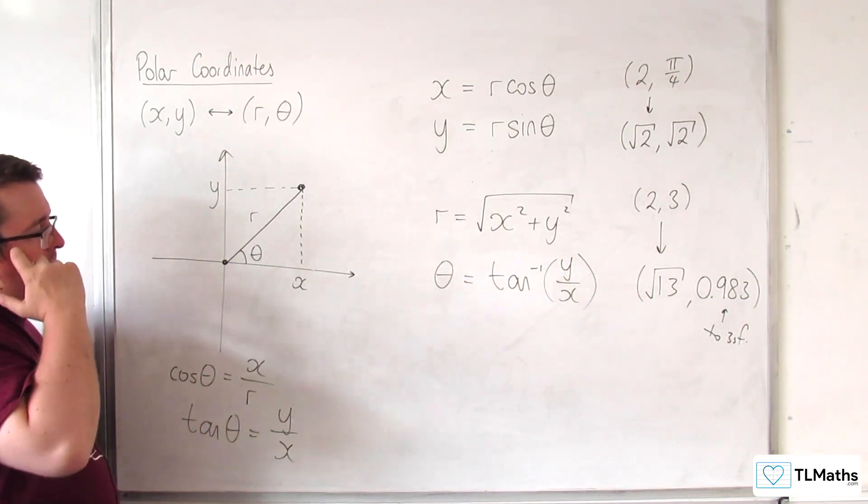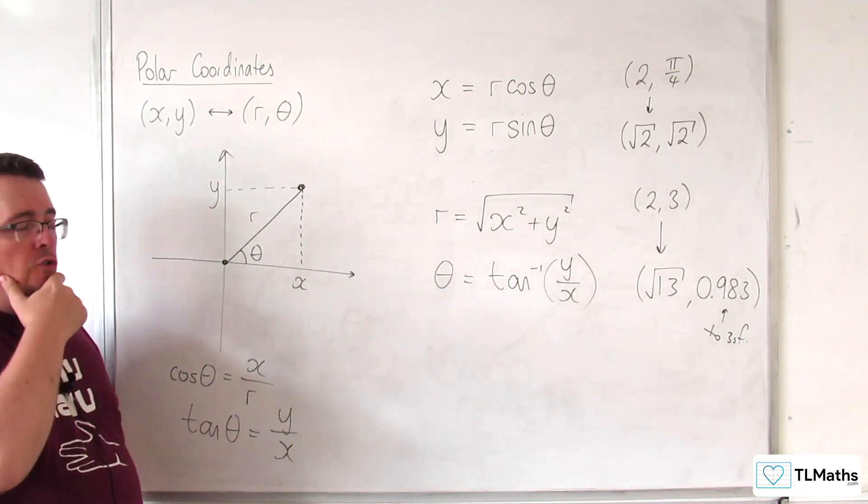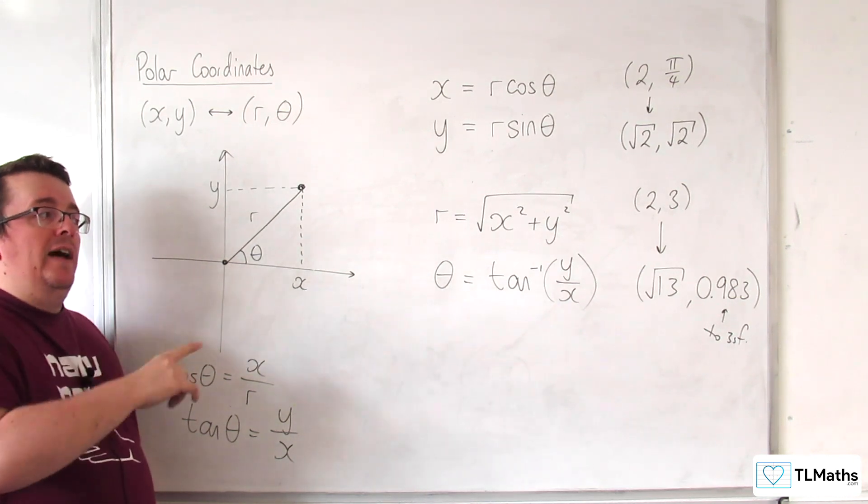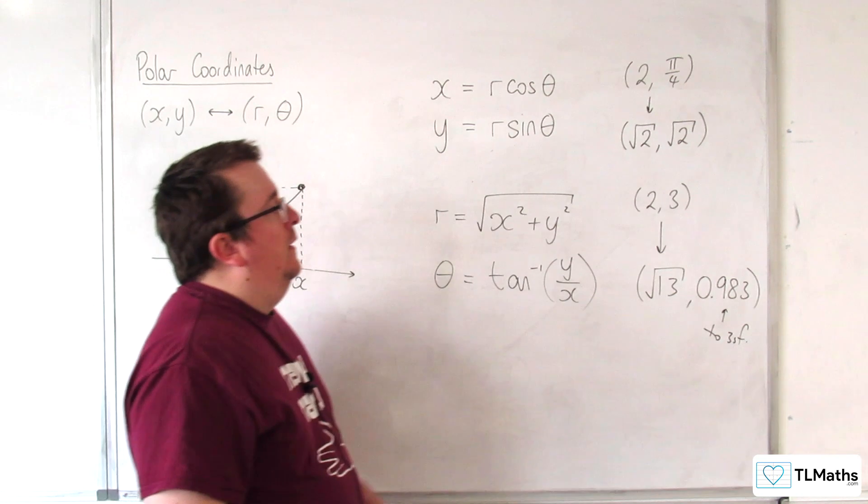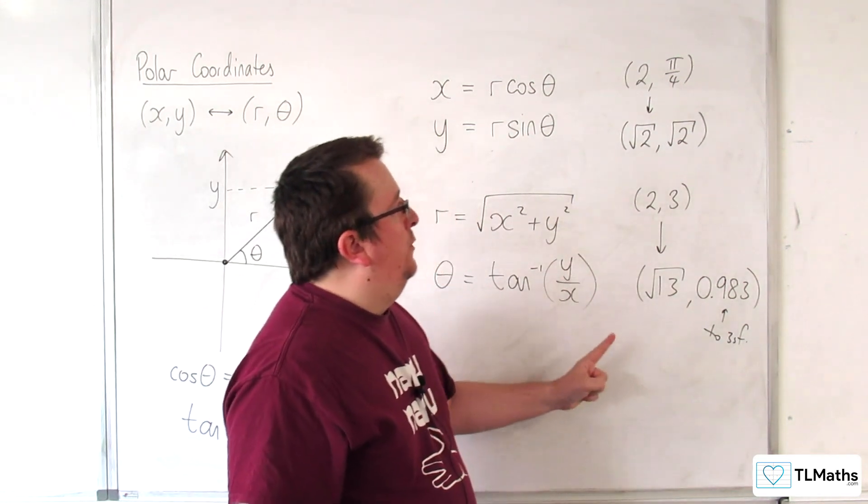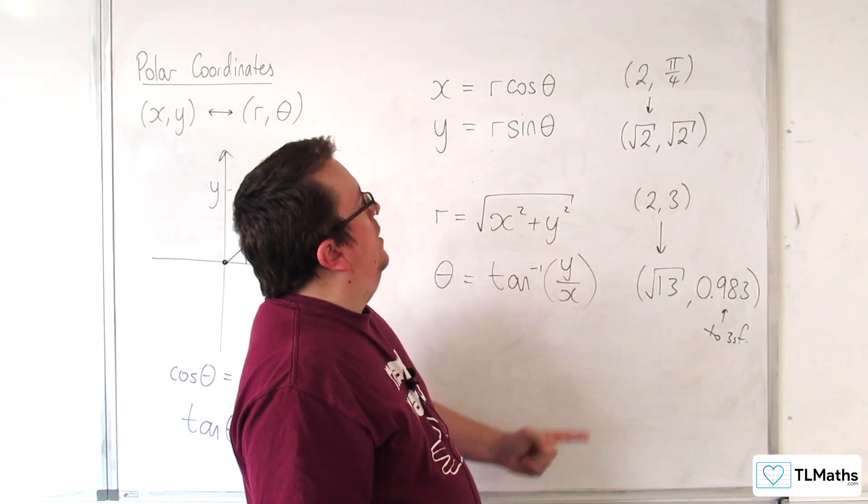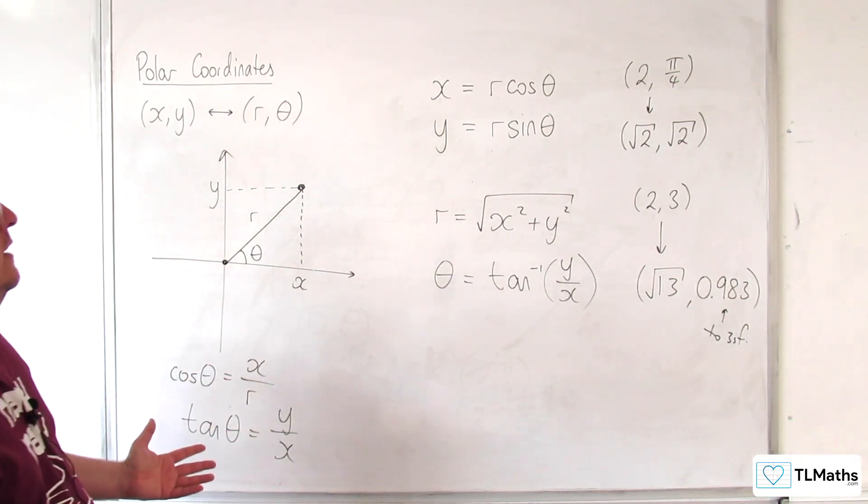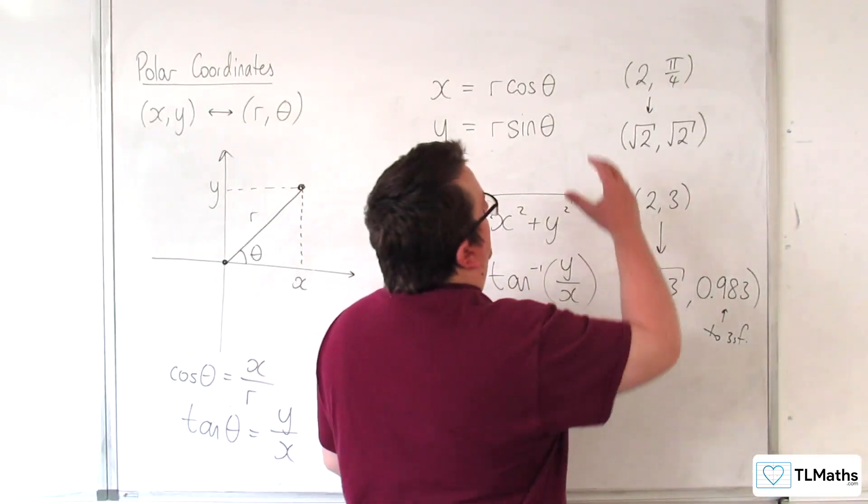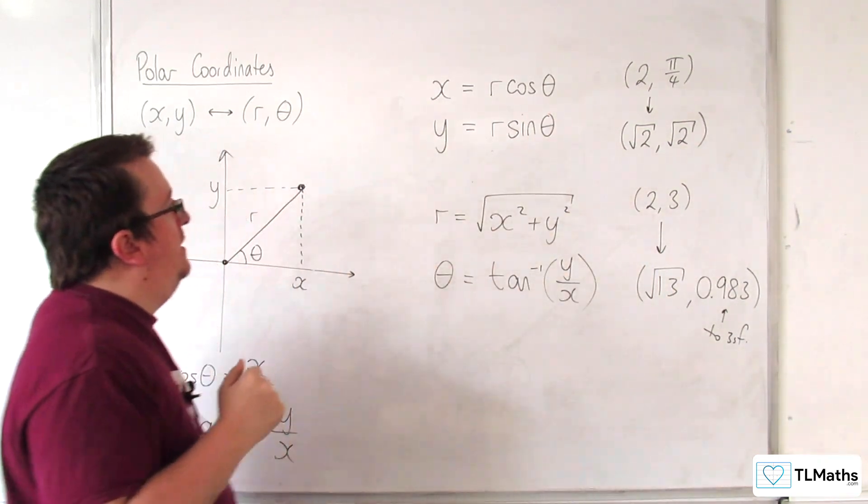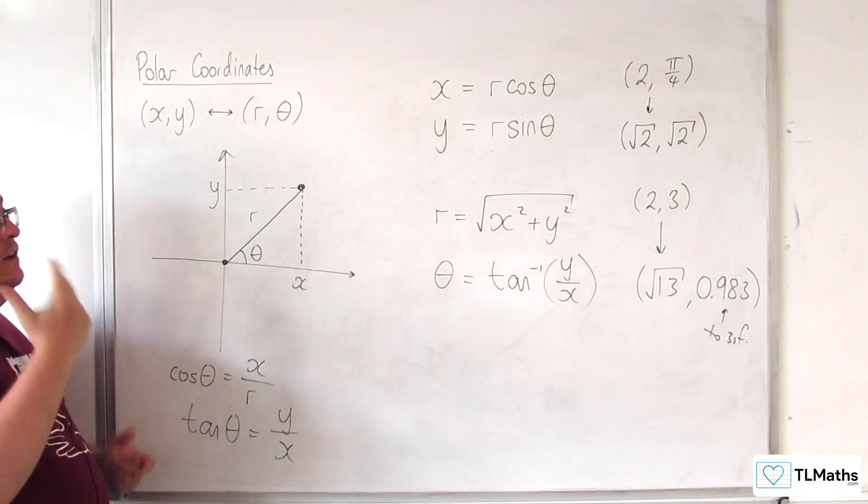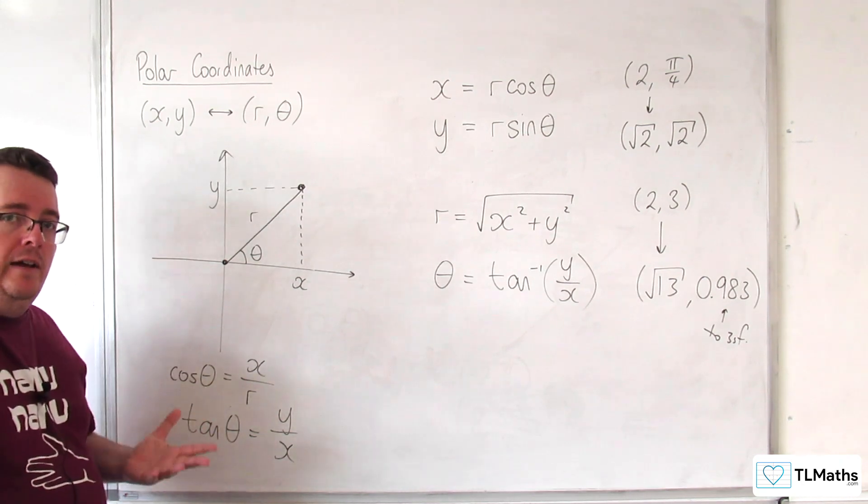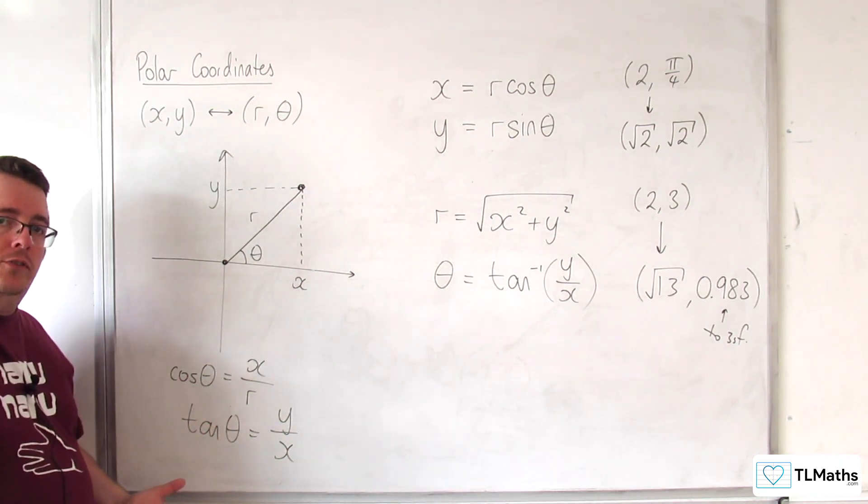I would always recommend doing a little sketch so you can visualize where the point is, so that you can mentally confirm whether this is right or not in either form. The worst thing would be that you make a silly mistake by substituting your points in and getting the wrong Cartesian form, when a little sketch could have confirmed to you whether it is correct or not.